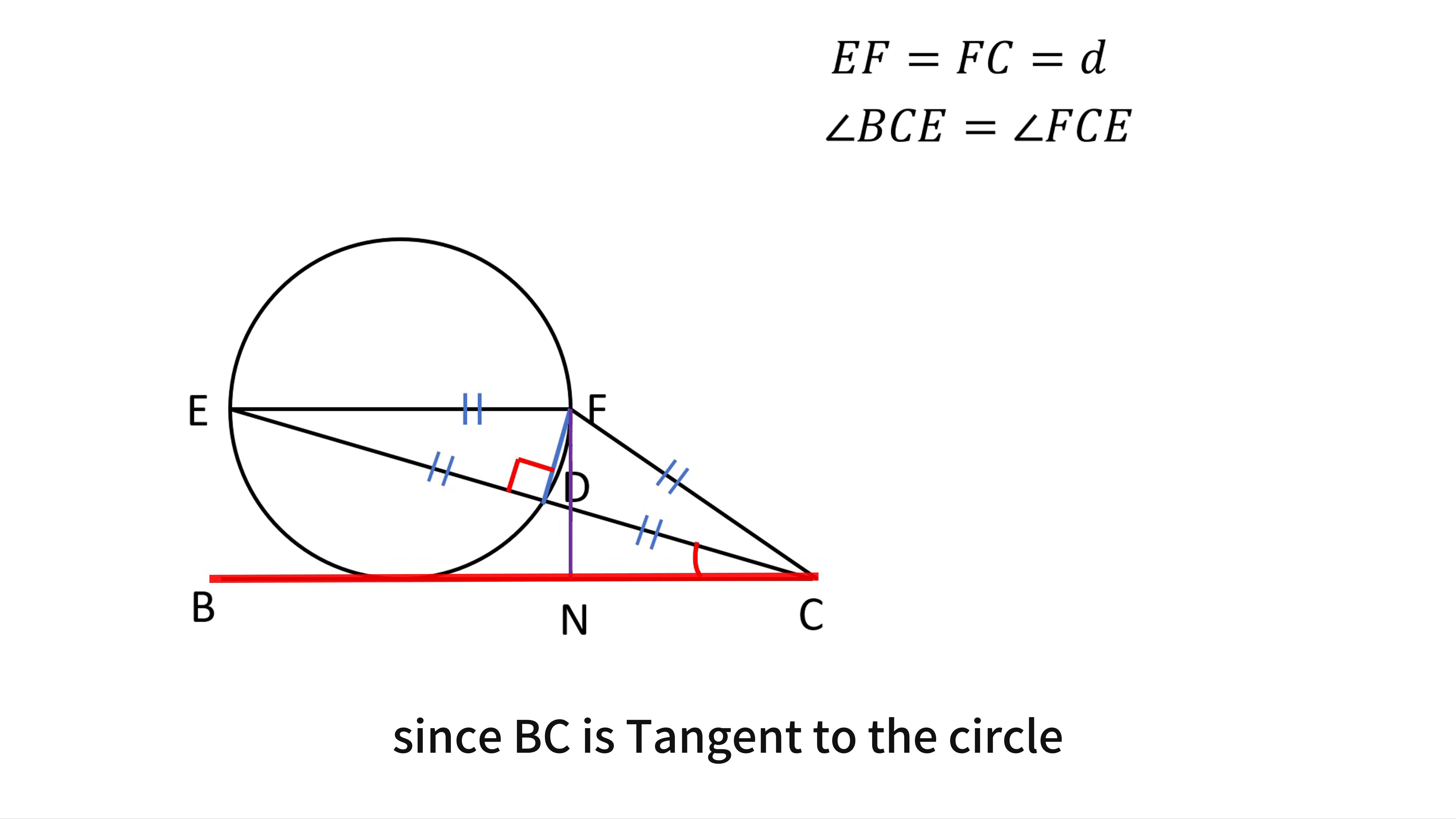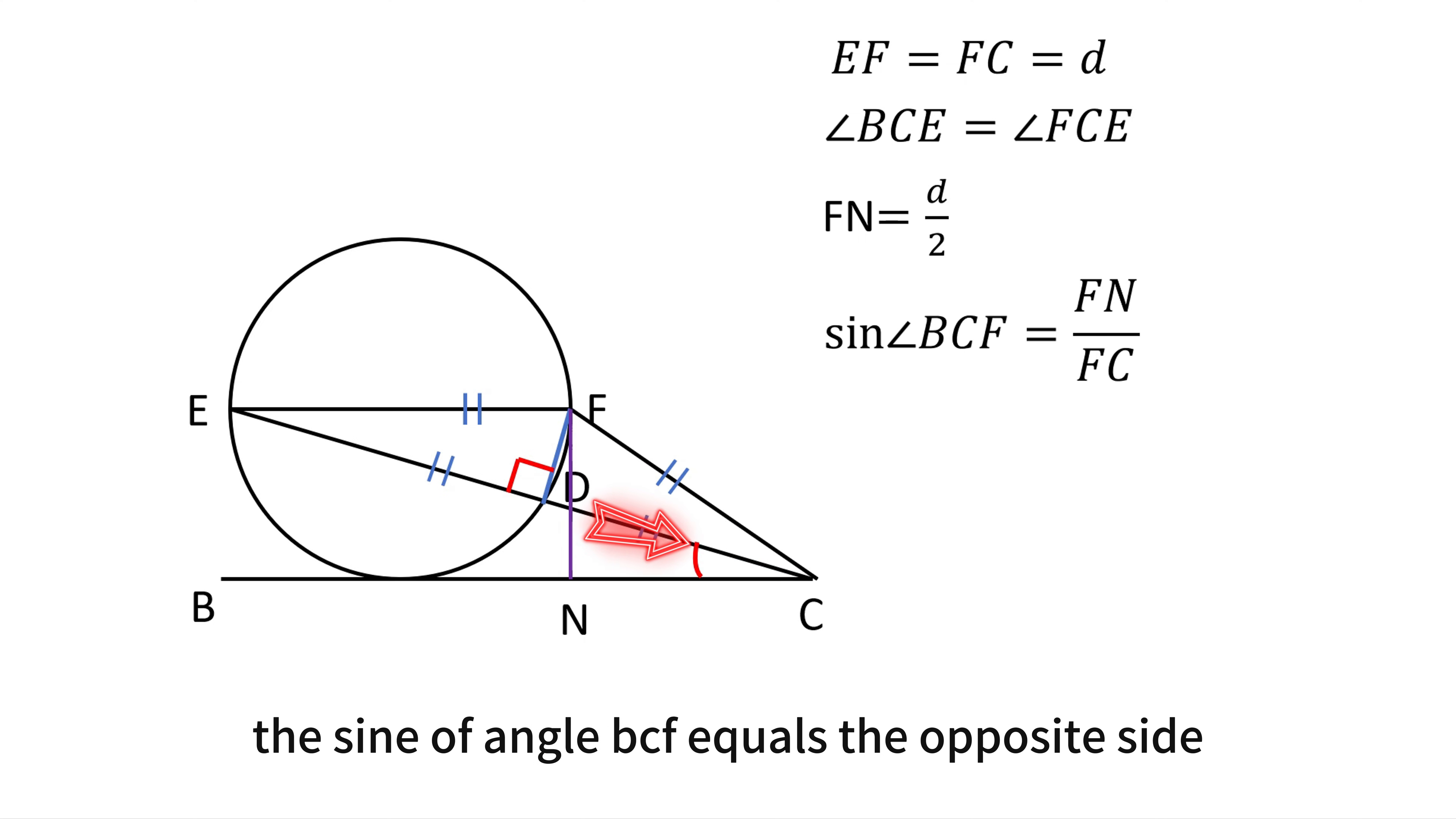Since BC is tangent to the circle and EF is parallel to BC, the distance between these parallel lines equals the radius, which is D over 2. Thus, FN equals D over 2. In the right triangle formed at C, the sine of angle BCF equals the opposite side FN divided by the hypotenuse FC.